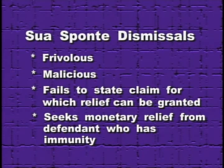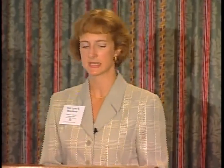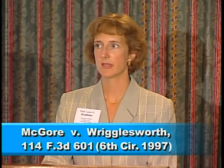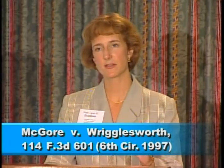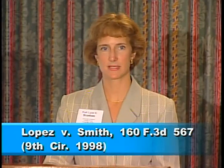The next hurdle involves the PLRA's provision for sua sponte dismissal of inmate claims that are frivolous, malicious, fail to state a claim, or seek monetary relief from a defendant who is immune from damages. One of the most controversial questions concerning these screening provisions is whether the court has discretion to afford an inmate the opportunity to amend his complaint before a sua sponte dismissal. The Sixth and Ninth Circuits have concluded the court does not have that discretion — if the complaint on its face does not state a cognizable claim, the court must dismiss it and cannot give the inmate the opportunity to amend.